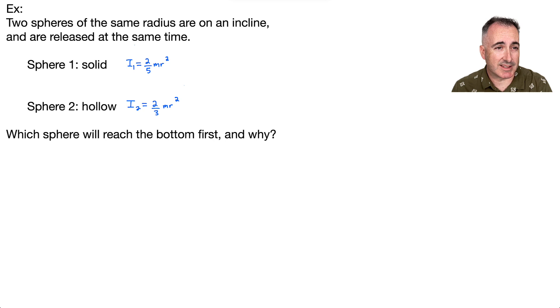So let's consider an example. We have two spheres of the same radius, and they're on an incline, some sort of hill going down. And each of these is just going to roll down the hill. And we're releasing them at the same time, and they have the same size.